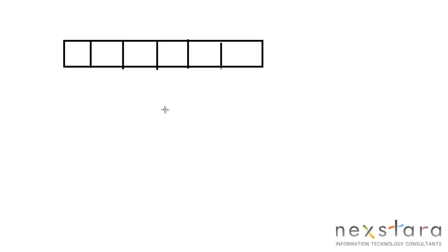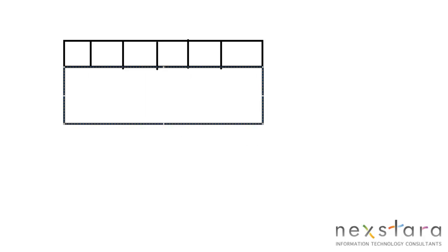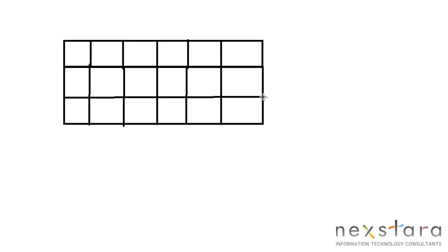Whenever we talk about another dimension in programming, we're going to simply extend this. When I think of a rectangular array, I think of an Excel spreadsheet — your rows and columns. So this would be a rectangular array with one, two, three, four, five, six.